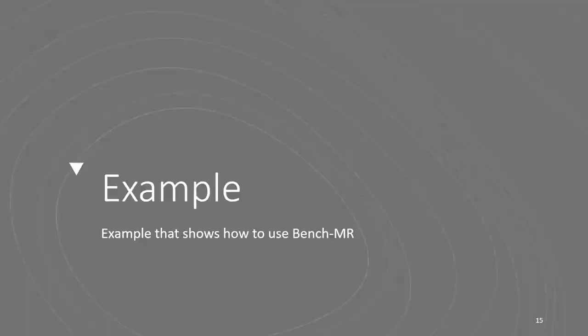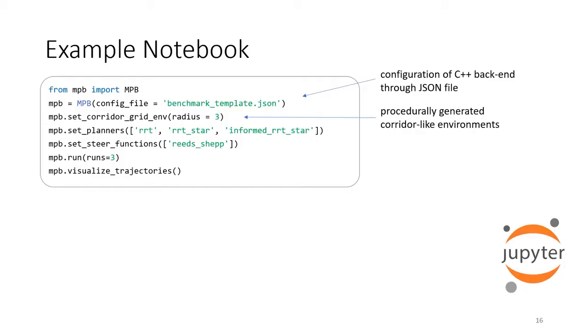Let's take a look at an example on how to use BenchMR. Here you can see an experiment defined in a Jupyter notebook cell. We first create an MPB instance which manages the benchmark settings. We define the name of the benchmark run, specify the environment, select the planners to evaluate, and a steer function. Finally, we run the benchmark and visualize the trajectories.